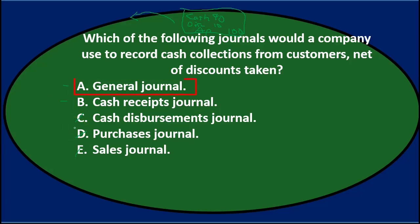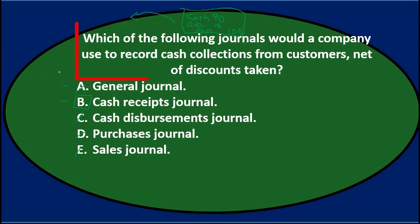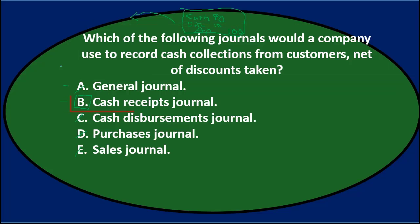We're left with A) general journal — the default — or B) cash receipts journal, which is the better fit. Since we can place this in the cash receipts journal, we don't need the general journal. The answer is B — cash receipts journal.